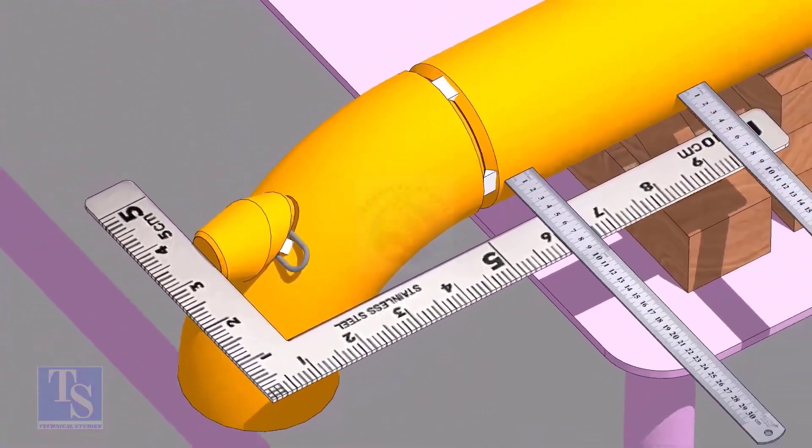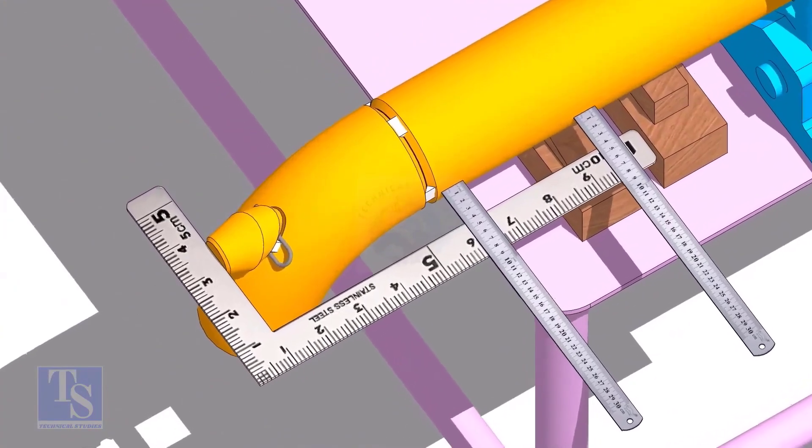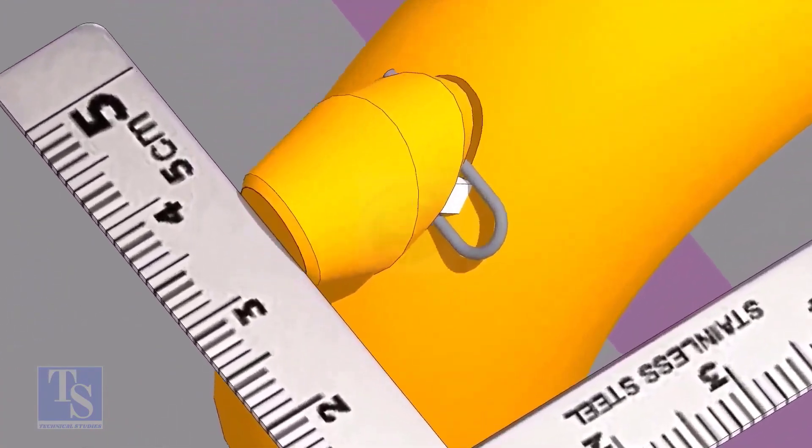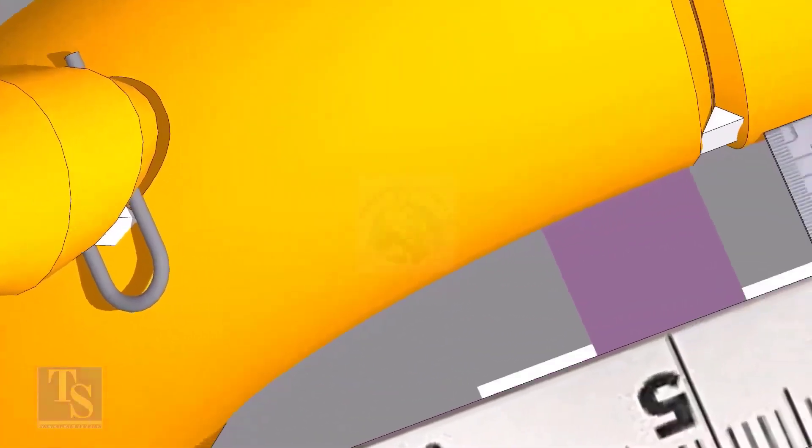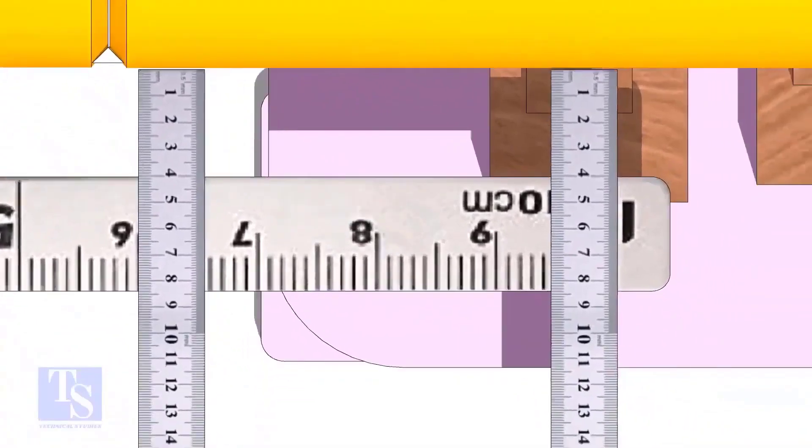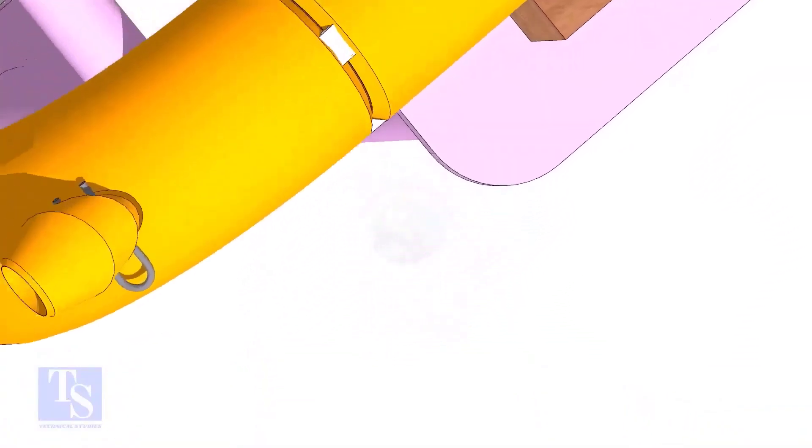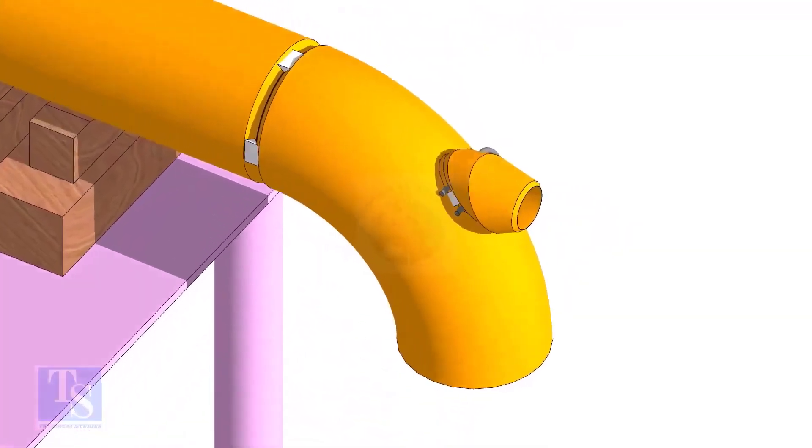Make the elbowlet face square to the side of the pipe. Tack weld on the opposite side.